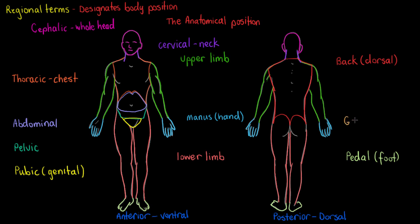The last region we have on the body is the gluteal region, and the gluteal is just your butt. So just drawing it in here, and that's the last region of our body. In part two we're going to subdivide all of these regions and get a little bit more technical. As always, thanks for watching and take the quiz to help your understanding.